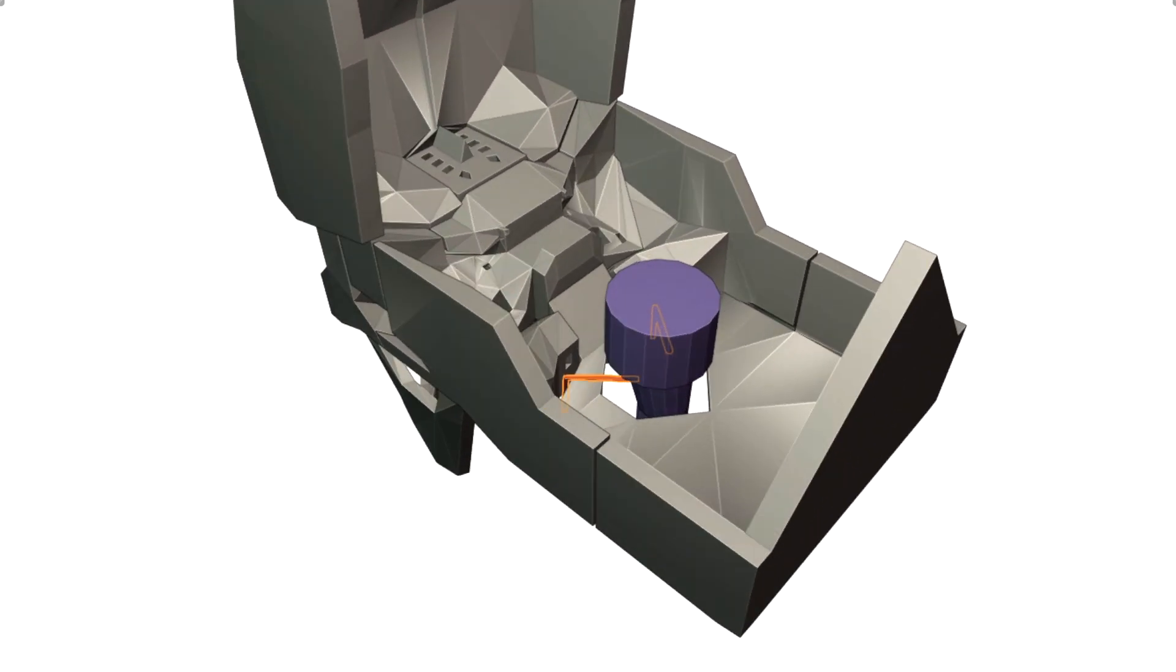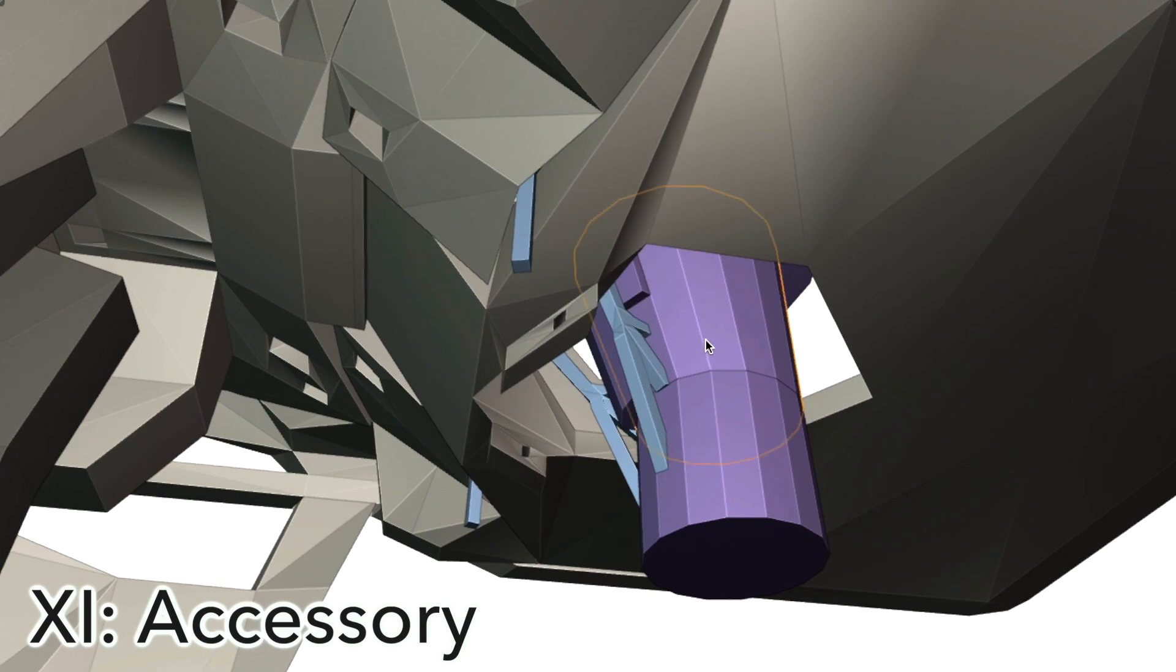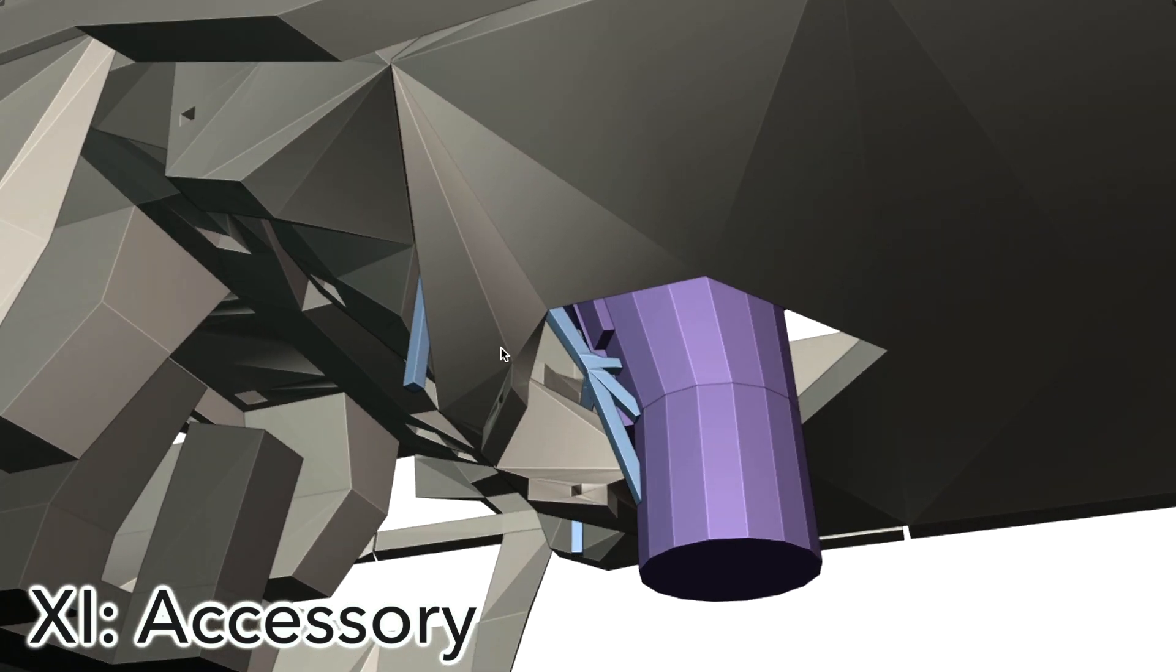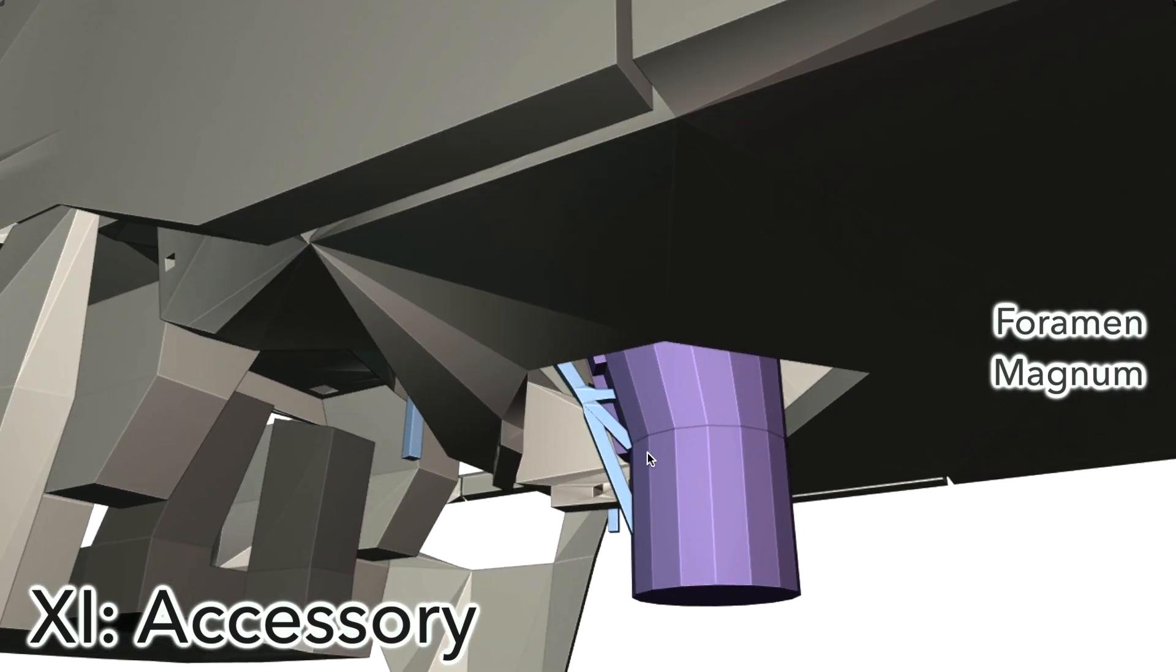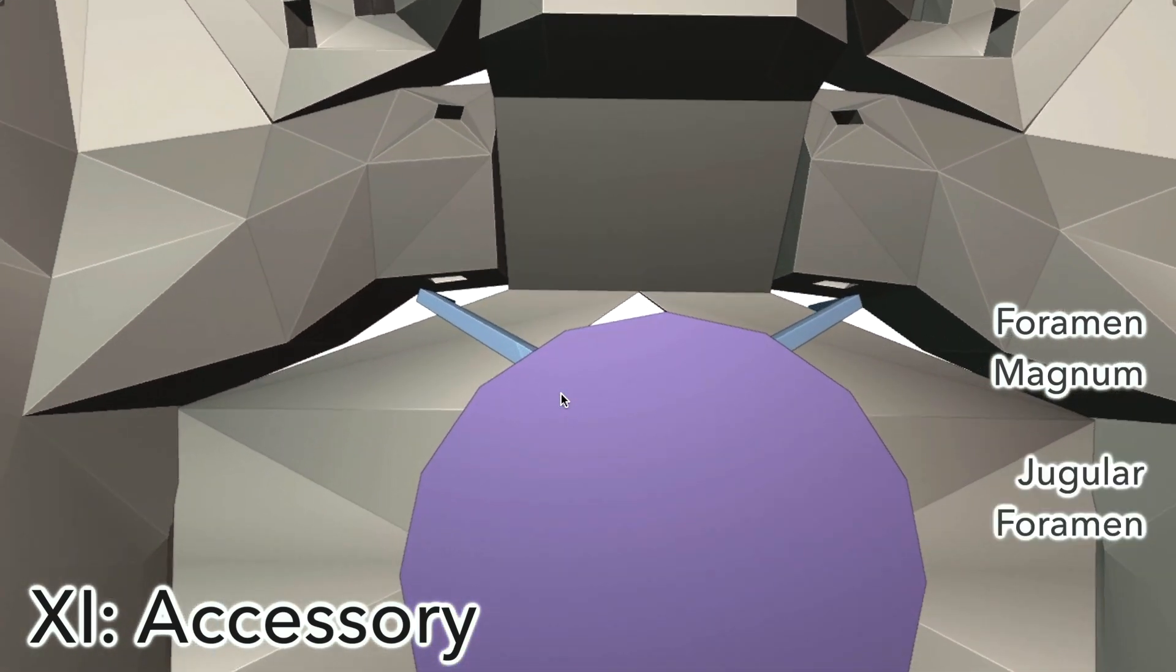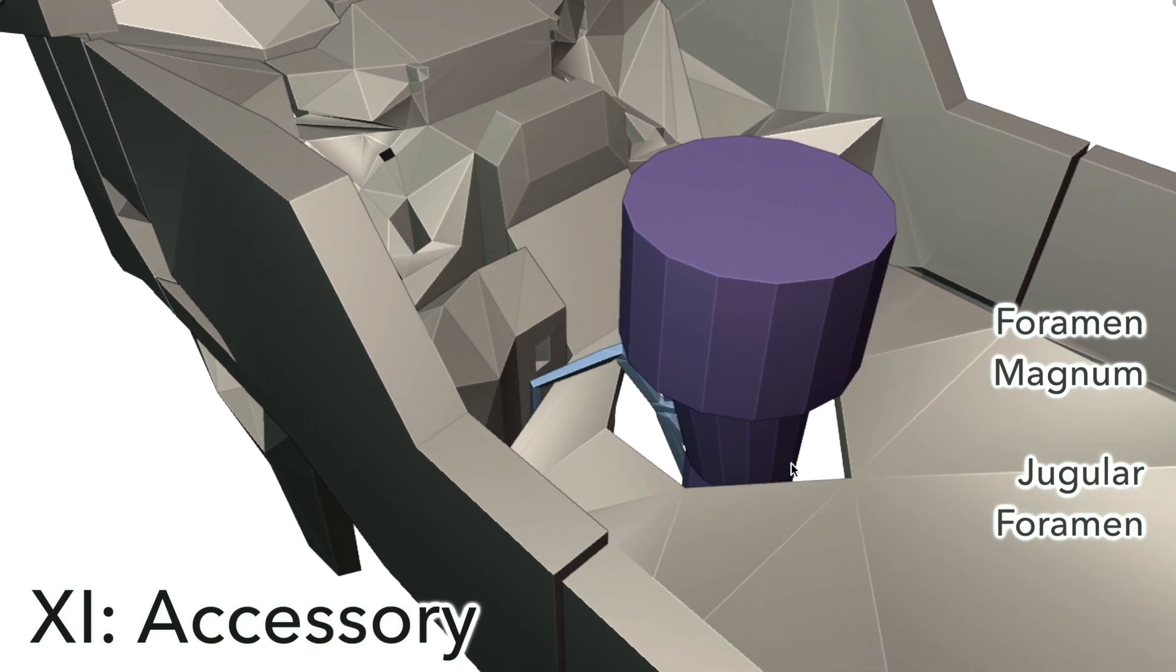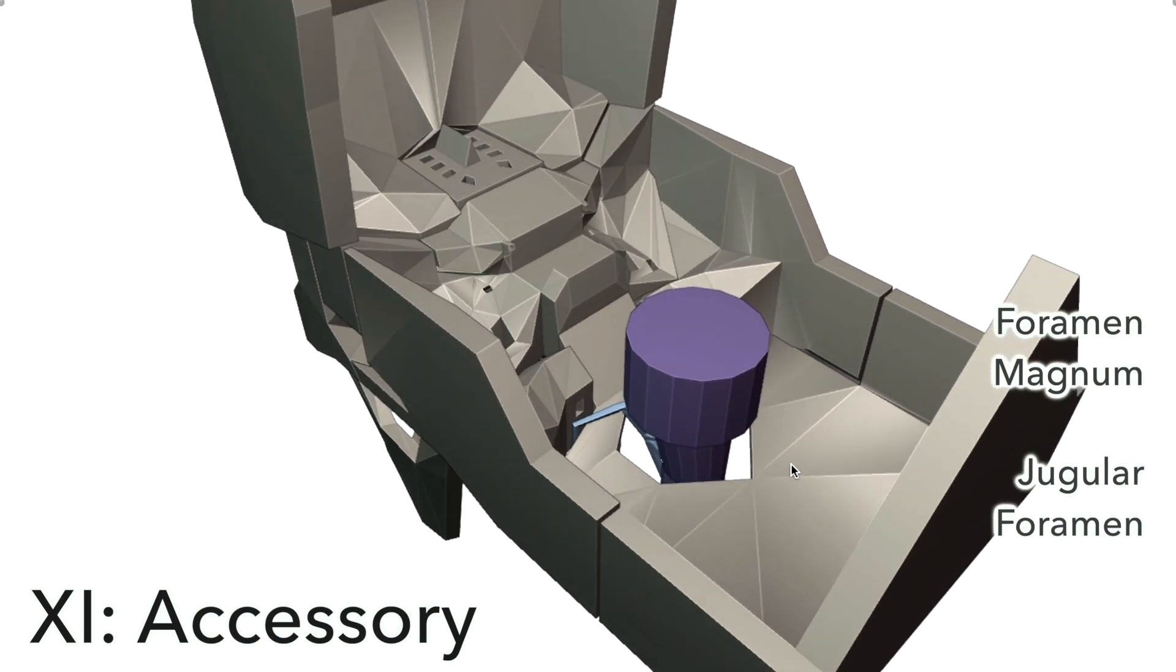Let's move on to number 11 now, which is the accessory nerve. Interestingly, it's actually formed from two separate roots, one which comes from the spinal cord down there, and the other root comes from the medulla. The spinal root comes through the foramen magnum, which is this large hole on the base of the skull here, to join with the other root before they head out together through the jugular foramen. Its destination is the trapezius and sternocleidomastoid muscles. So whenever you shrug your shoulders, you're activating your accessory nerve.